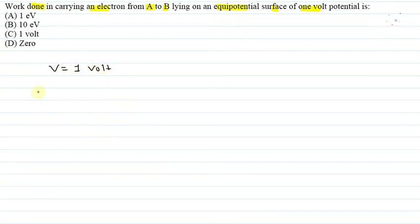We have given an electron from A to B on an equipotential surface of one volt. So we have shown that voltage for A is equal to voltage for B is equal to one volt, because it's an equipotential surface.